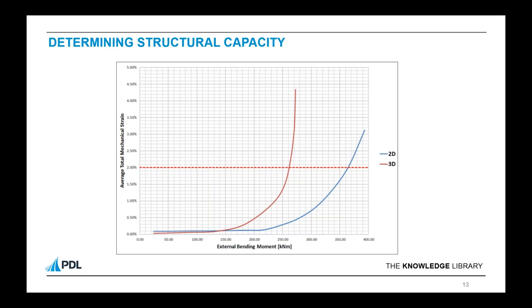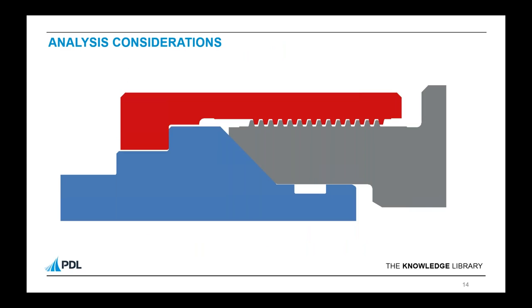Moving on to things that need to be considered when setting up your model: geometry is a very significant part of the analysis. We're showing a 2D representation of the connector with a tooth profile model. One thing worth mentioning is the effect of the helix angle — generally you wouldn't be too worried about modeling that. Where we have modeled helix angles within geometry models we've not seen any significant impact on capacity, so it's fair to treat teeth as 2D features in an axisymmetric model or as sets of annular rings within your 3D analysis.